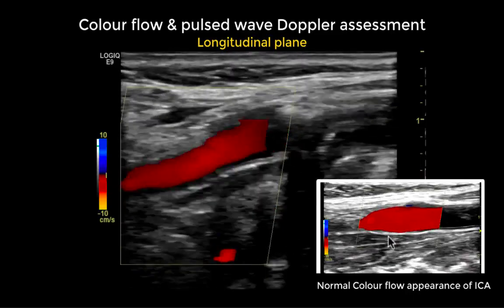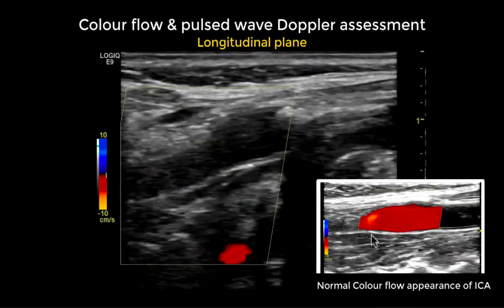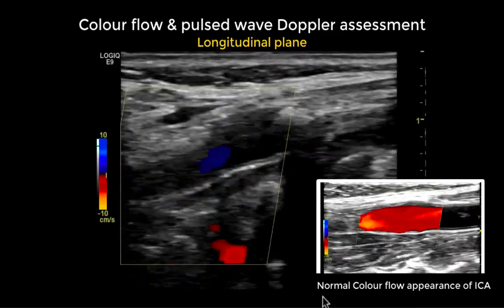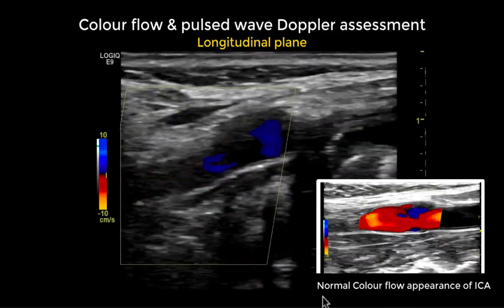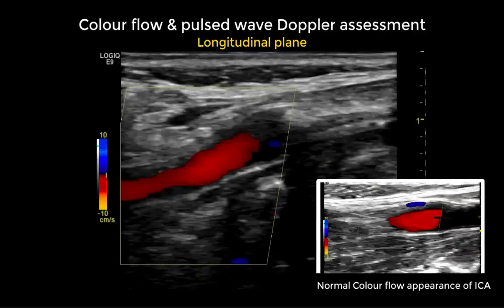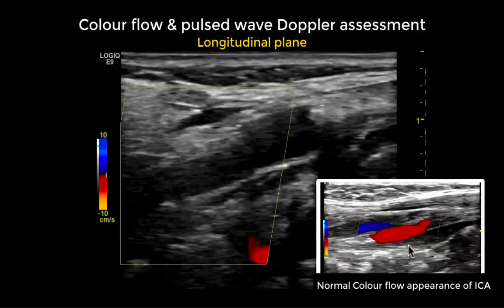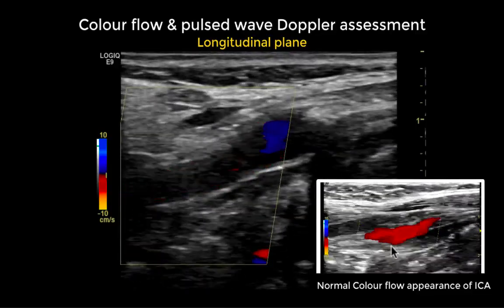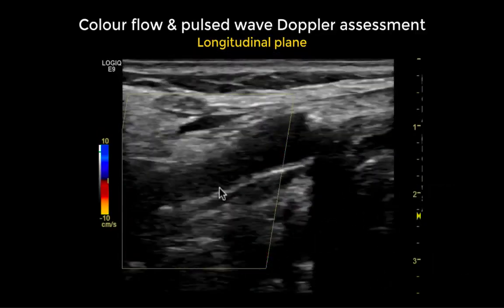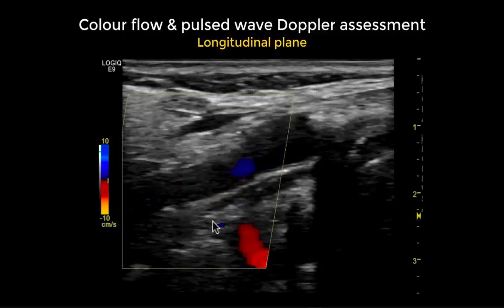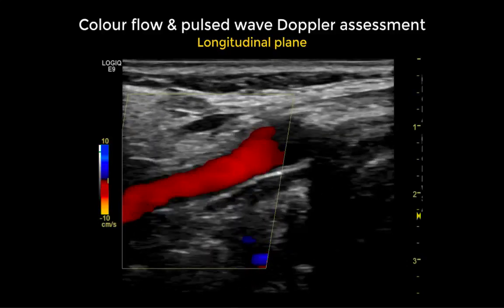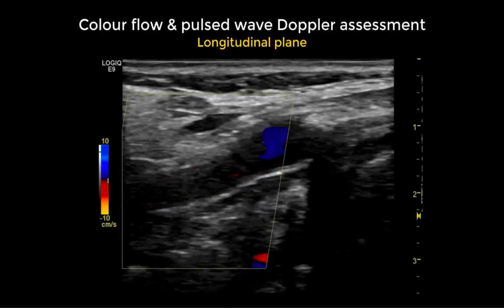In normal conditions there is continuous filling of the internal carotid artery. You can see here the difference between a normal pattern of colour flow and the abnormal alternating pattern we are observing.